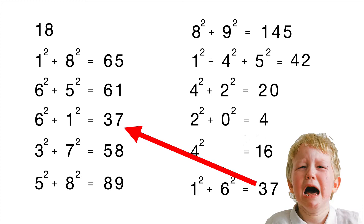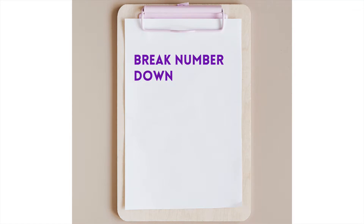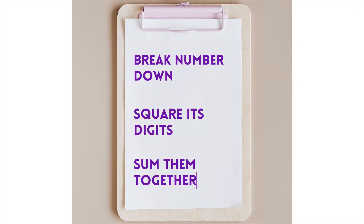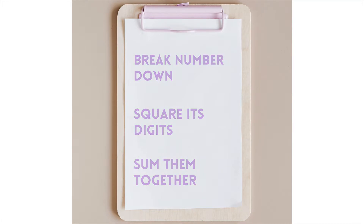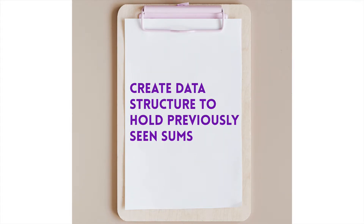Going through these examples, there are two main things our algorithm needs to do. First, we need a process for breaking a number down into its digits, squaring those digits, and summing them. Second, we need a data structure to hold the numbers we've seen already, so we can check whether we're stuck in an endless loop.